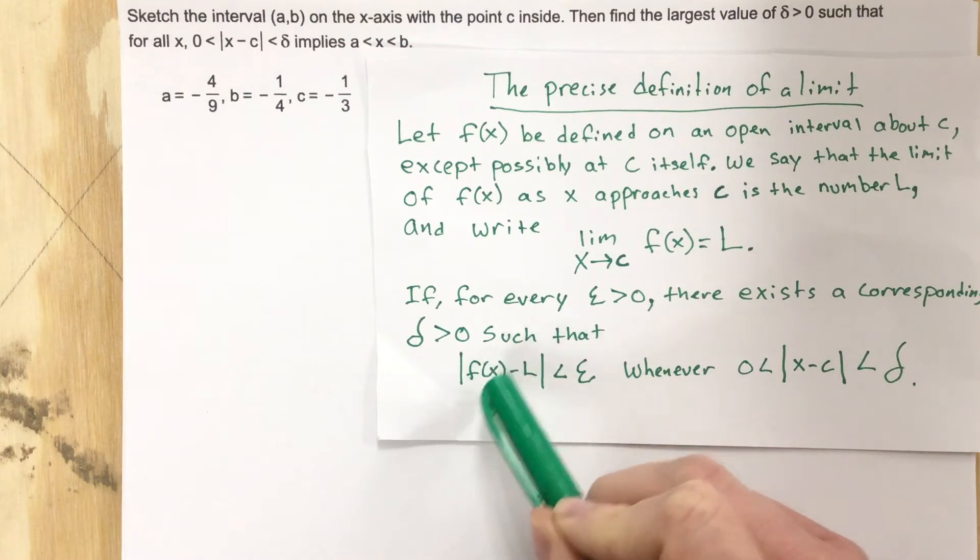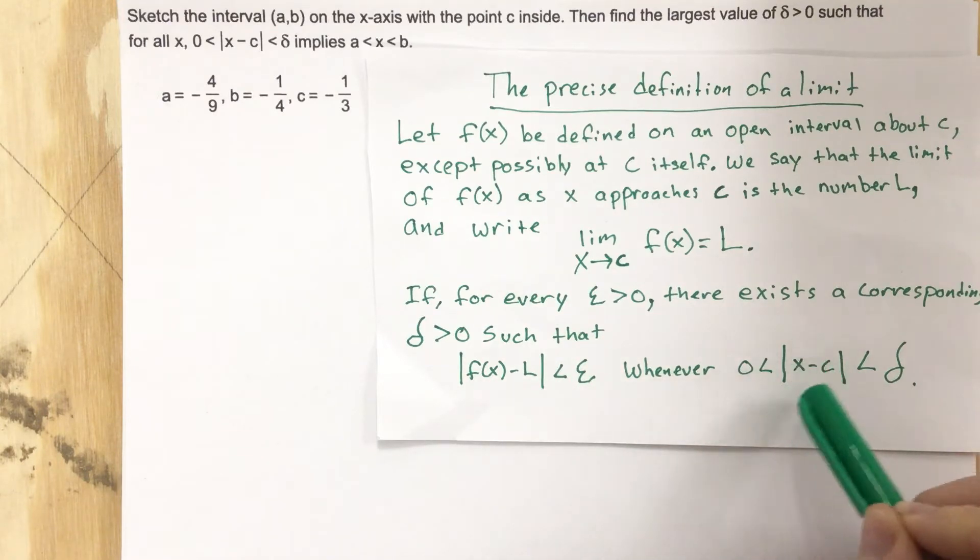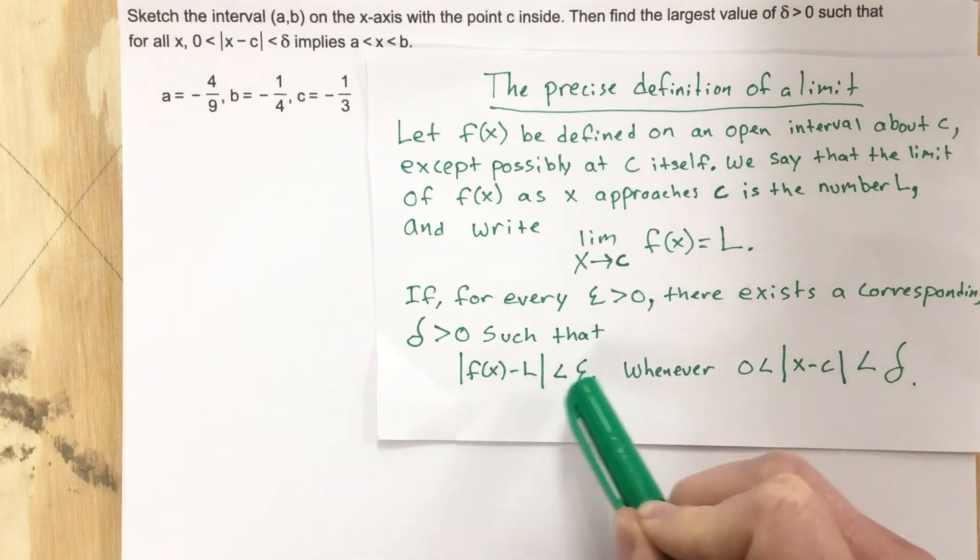Y values that are less than epsilon. So the idea is we need some x values that are less than delta so that we get some y values that are less than epsilon, and delta and epsilon are like tolerances.